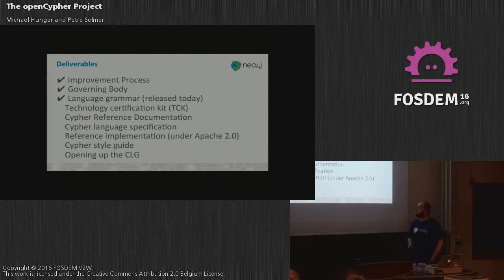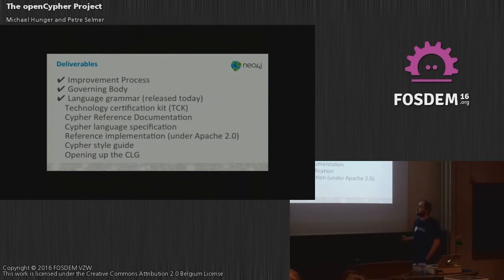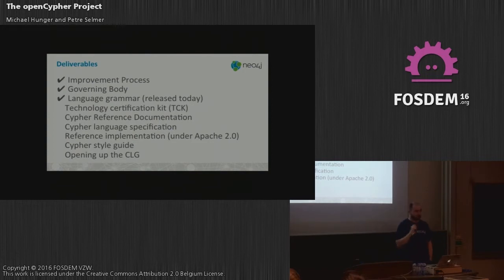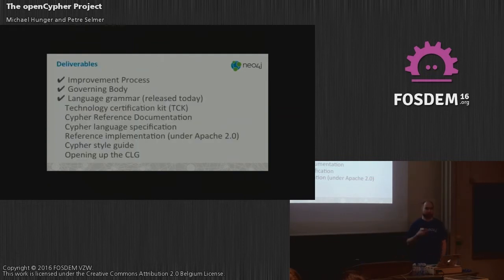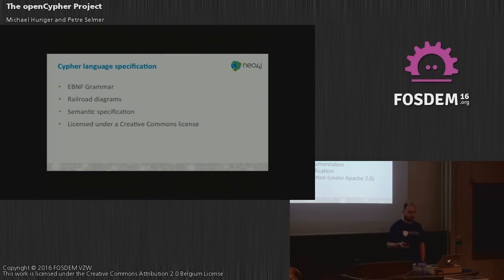We have some deliverables already completed and some still outstanding. The self-improvement process I showed today is in place, and the governing body is existing. As of today we released the first EBNF grammar for Cypher — you're the first to hear about it, it was pushed to the GitHub repository about two hours ago. This grammar enables people to write highlighters, verifiers, query generators, and validators for the language.